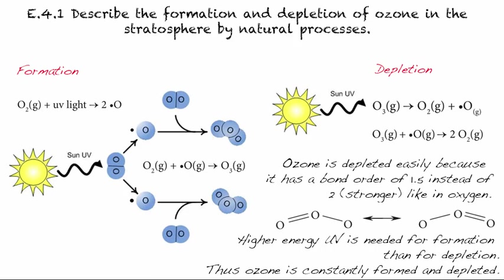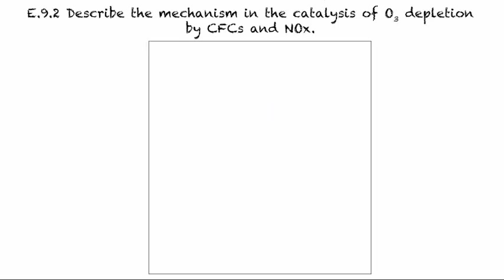Today we're going to describe the mechanism and catalysis of ozone depletion by CFCs and oxides of nitrogen. This connects back to E4.1 in the SL, where we looked at how ozone forms and naturally depletes in the natural cycle. We didn't talk about how CFCs and oxides of nitrogen interfere with this.